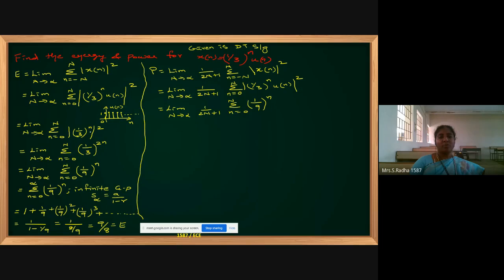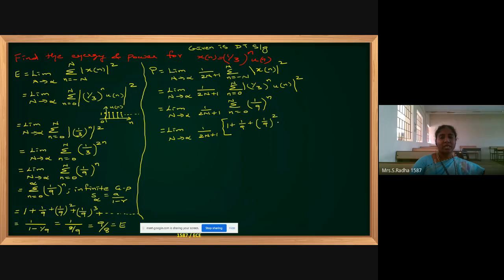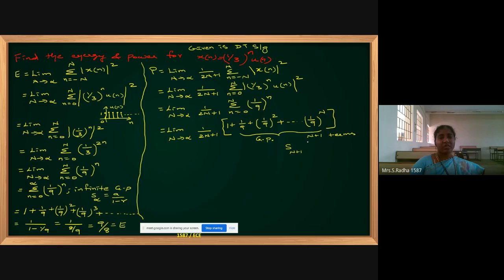In the next step: limit N tends to infinite, (1/(2N+1)), summation n equal to 0 to N of (1/9)^n — this again becomes (1/9)^n by the same calculation as before. Now you can see, if you expand this, it has N+1 terms: the first term is 1, second is 1/9, next is (1/9)², up to (1/9)^N. So we are having N+1 terms and this is a geometric progression.